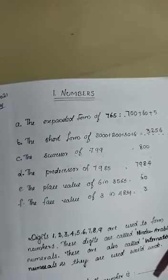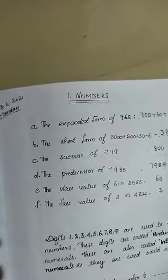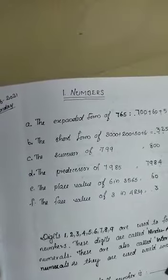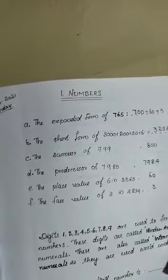3,000 plus 200 plus 50 plus 6. Then the successor of 799.